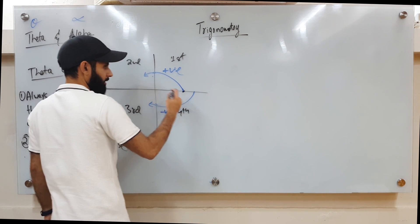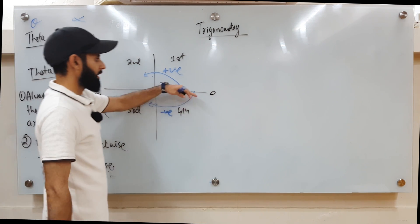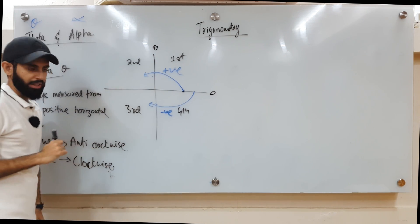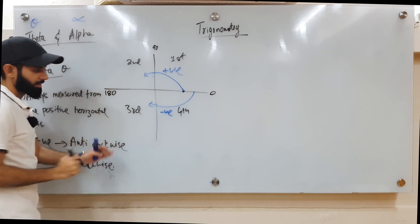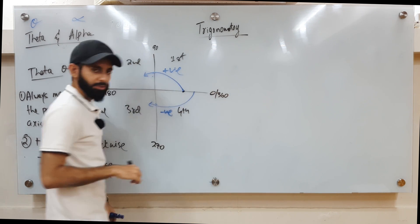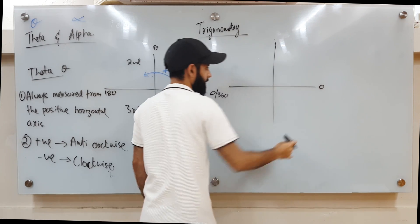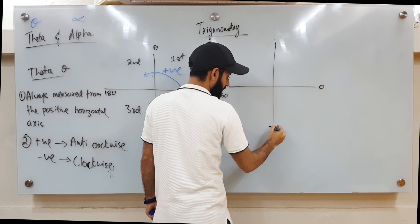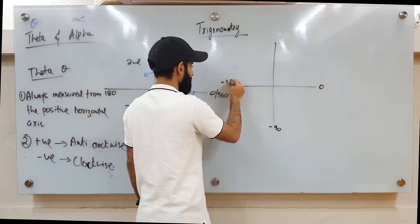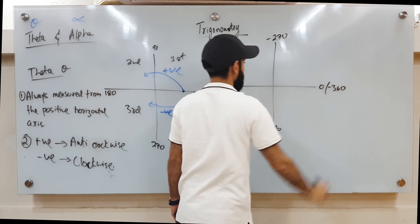Starting from the positive horizontal axis at 0°, going anti-clockwise: 90°, 180°, 270°, and back to 360°. Going clockwise instead: the same positions become −90°, −180°, −270°, and −360°.